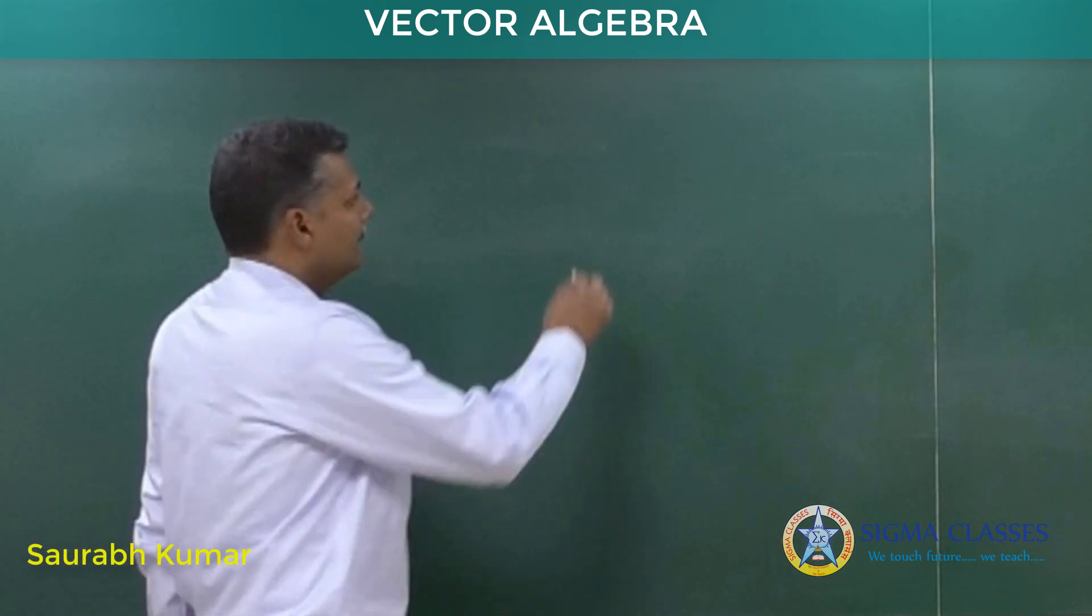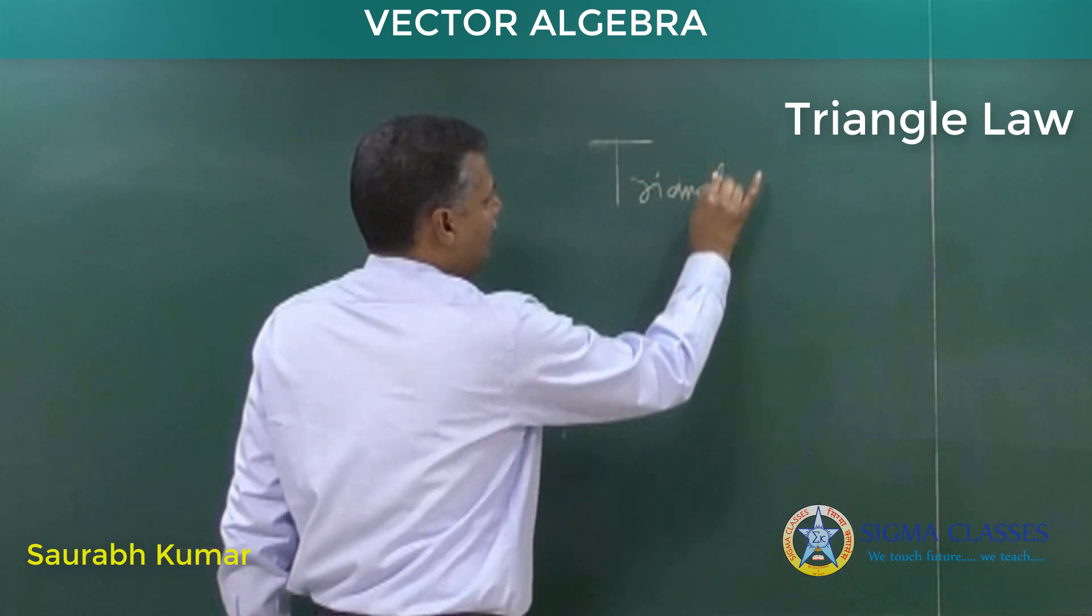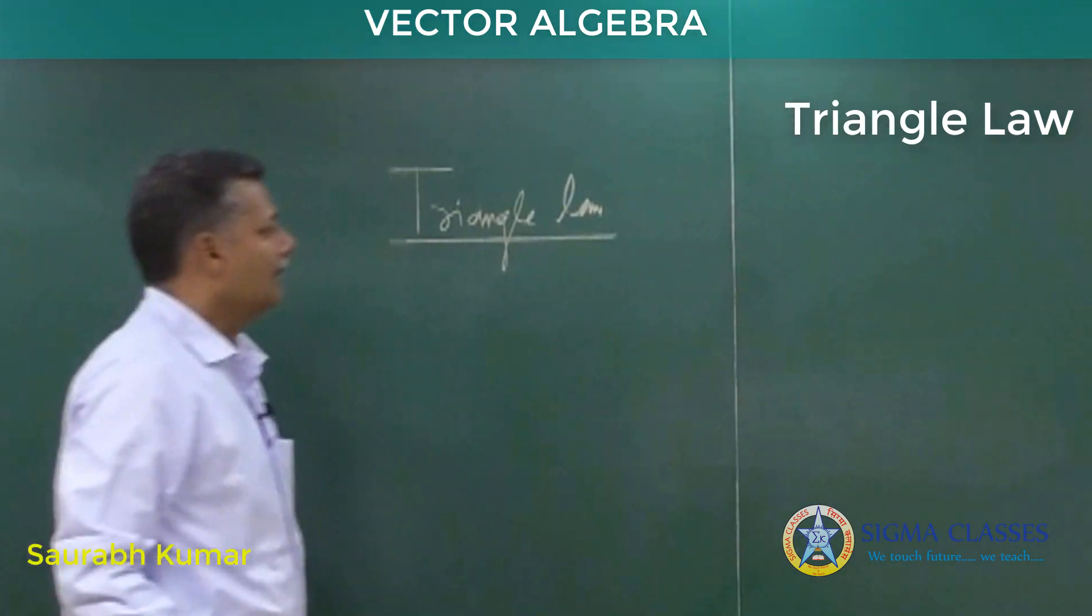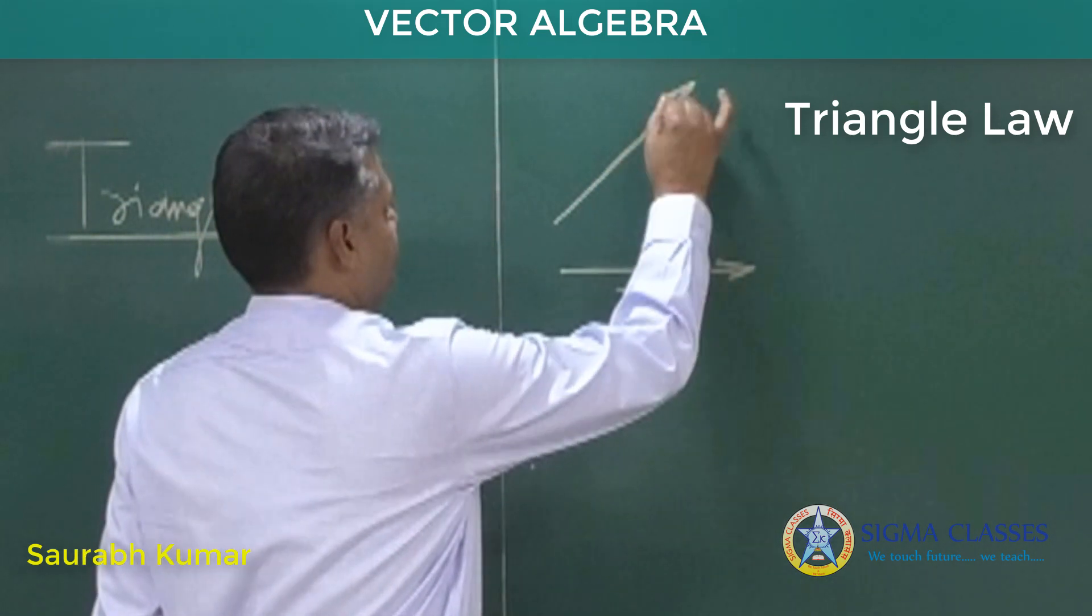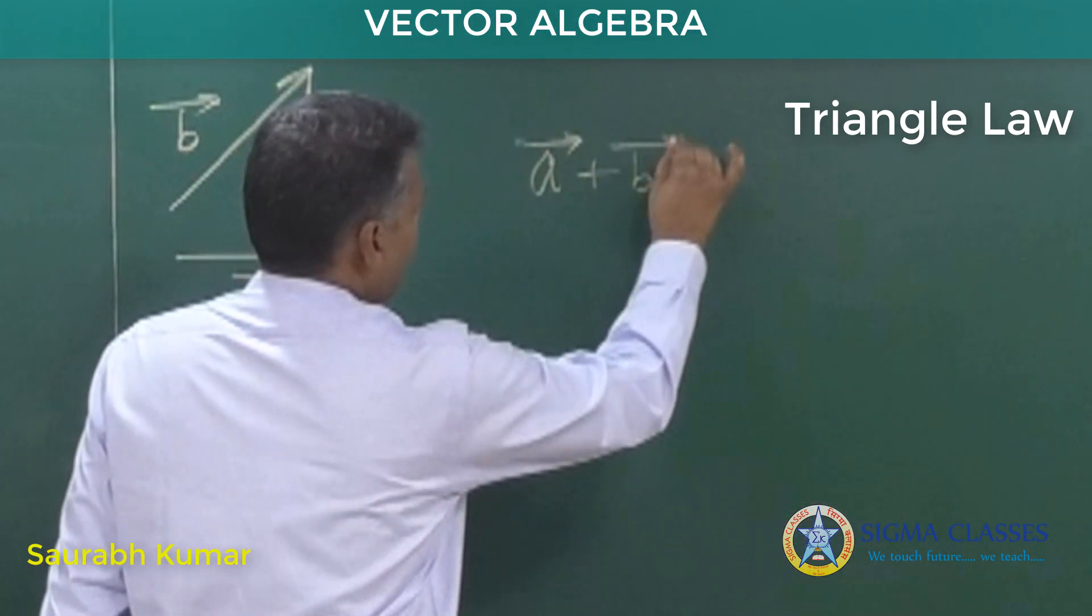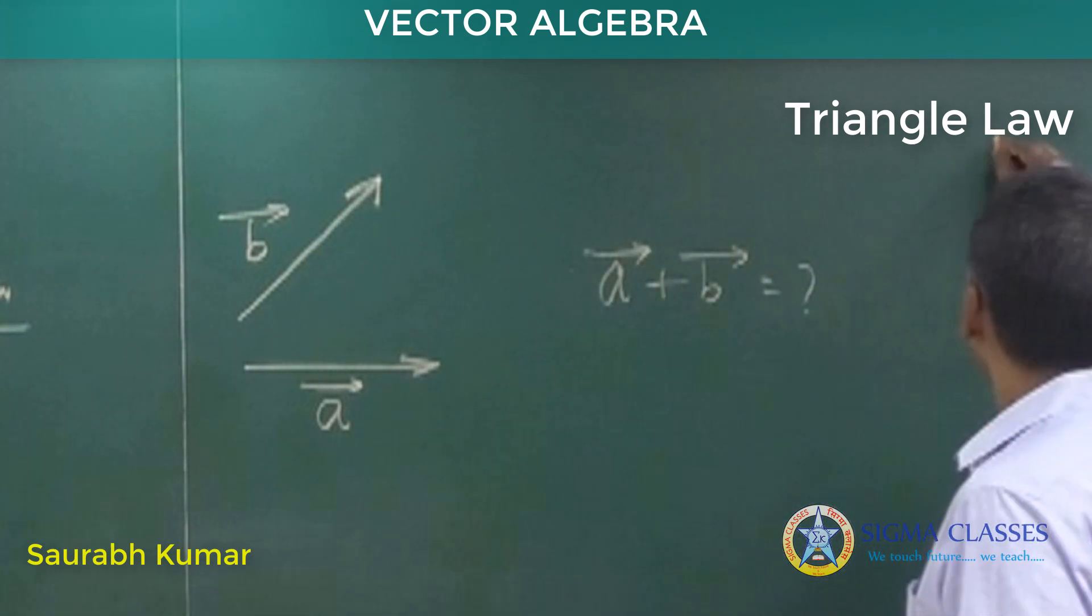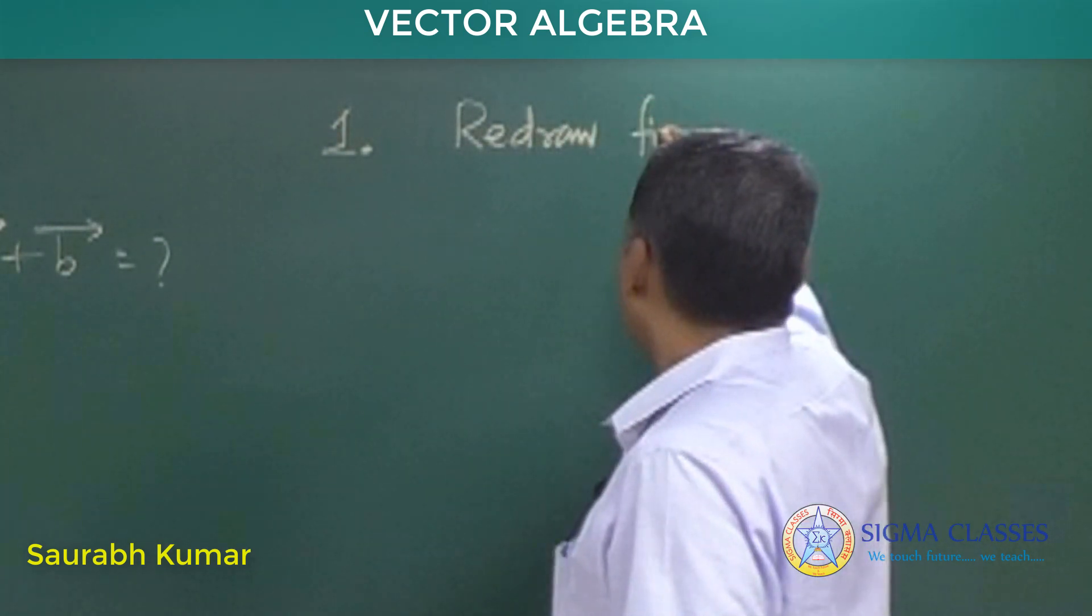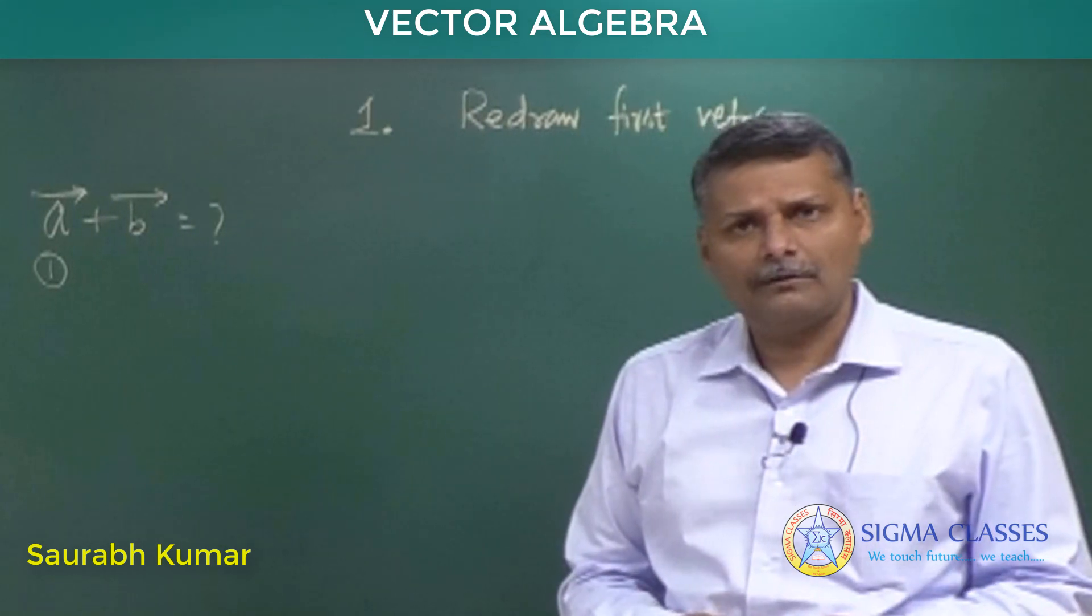First, let us discuss triangle law. Why this name? It will be clear to you. Let's consider a problem: suppose two vectors A and B are given and you have to find how much is vector A plus vector B. Step one: redraw first vector. So vector A is the first vector, so we are supposed to redraw first vector.